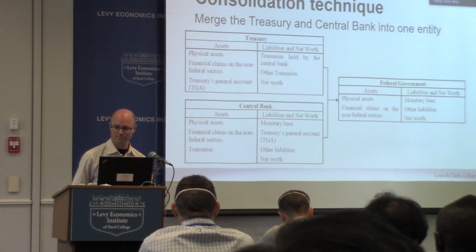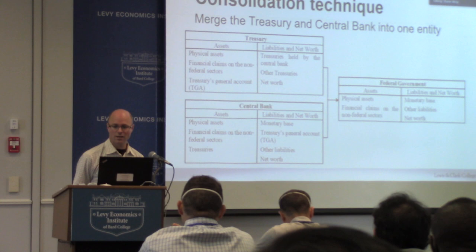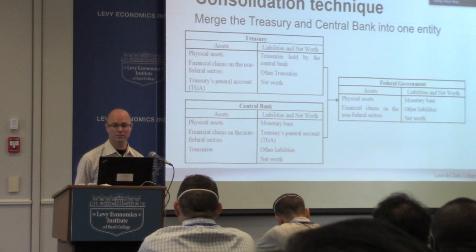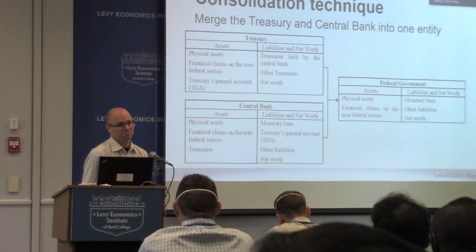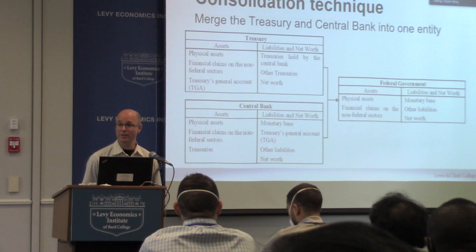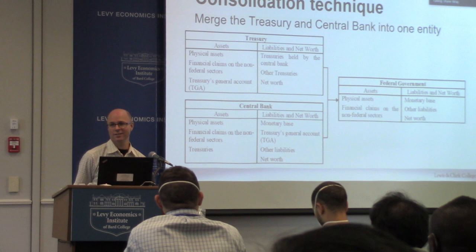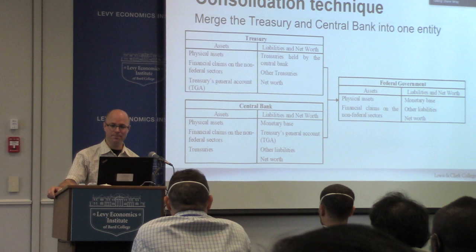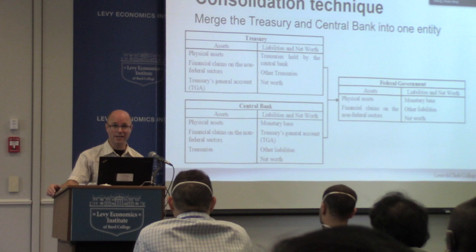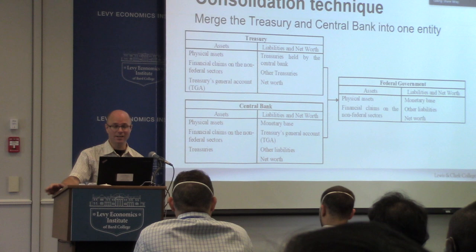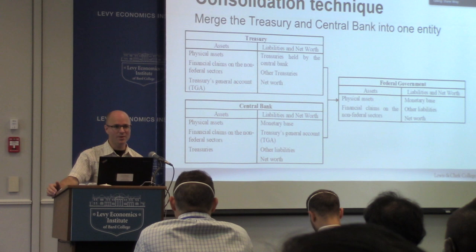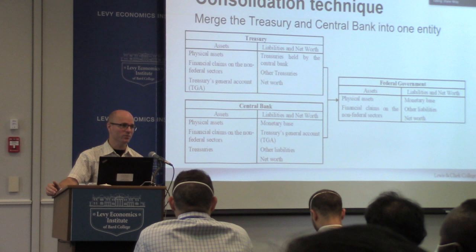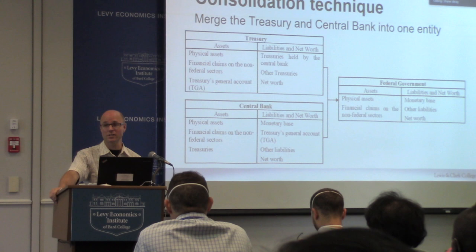Now we put them together. What disappears is first the Treasury General Account — it's an asset on one balance sheet and a liability on the other, so they cancel out. The public debt held by the central bank also goes away, and we rename those securities 'government securities' rather than Treasuries since there are no more Treasuries as a separate entity. Then we look at the implications and move to critiques of this way of thinking. Consolidation is actually not only used by MMT — it's quite common — but some people are still not happy, so we'll separate the two institutions and look at their coordination.